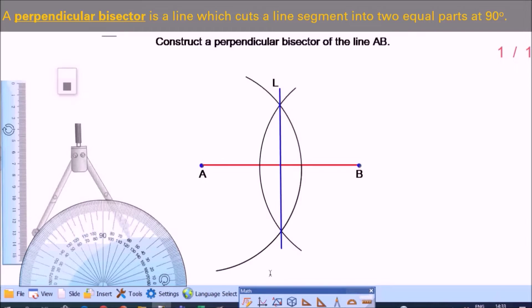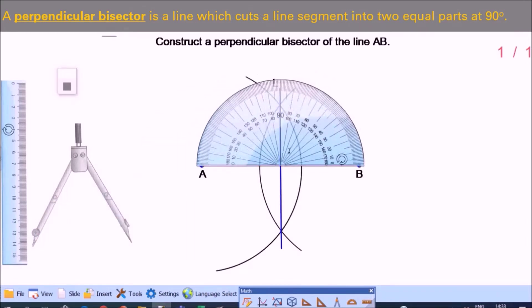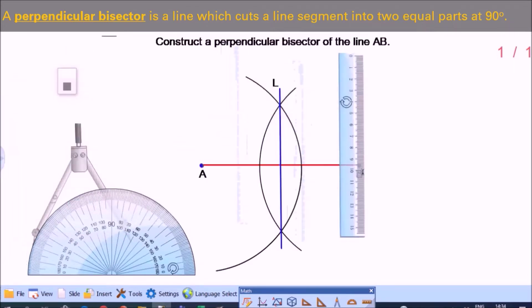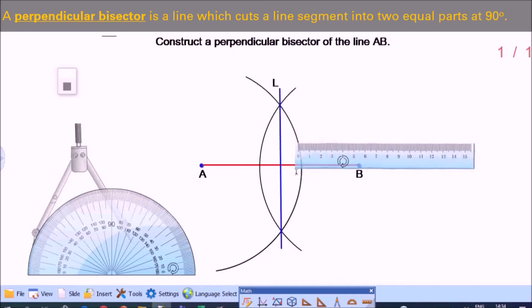Let's use our protractor. Remember, using a protractor, the center should be on the intersection. And you see, yes, the line is 90 degrees with AB. Does it cut AB into two equal parts? So that is, A to the middle should be equal to B to the middle. Let's measure the left side.